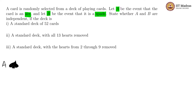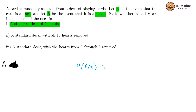State whether A and B are independent if the deck is a standard deck of 52 cards. The condition for independence is that the probability of one event should not change whether or not the other event has taken place — which means P of A given that B happened should be the same as P of A.